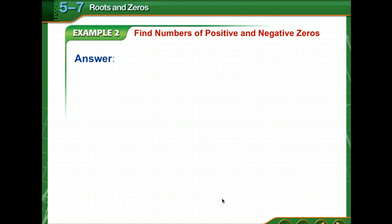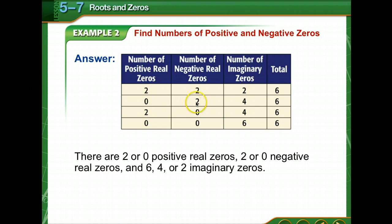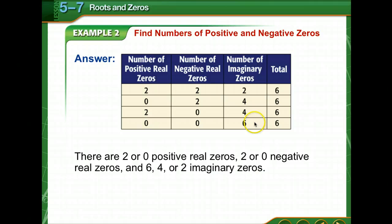We're going to make a chart of possible combinations. We know there must be a total of six zeros. There could be two or zero positive and two or zero negative. If there are two positive and two negative, that leaves two imaginary. If there are zero positive and two negative, there would be four imaginary. If there are two positive and zero negative, there would be four imaginary. If there are zero positive and zero negative, there would be six imaginary zeros.